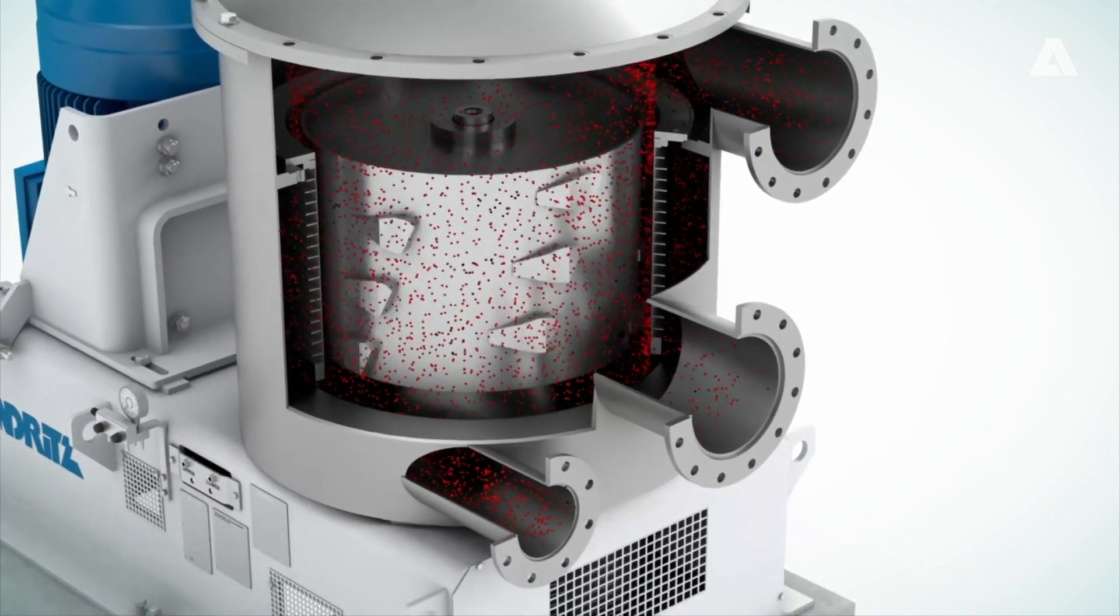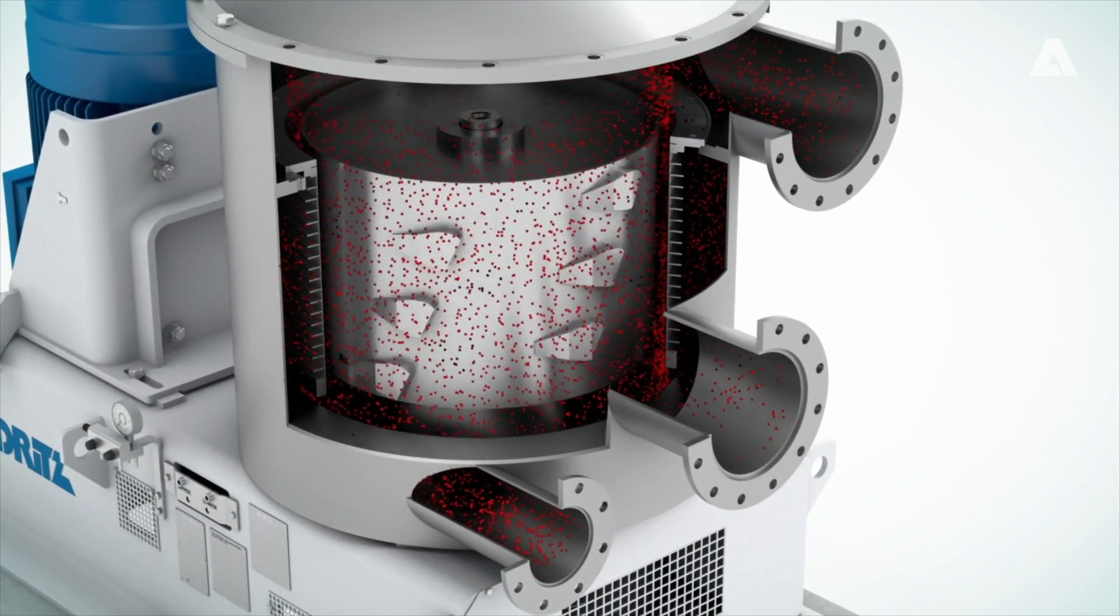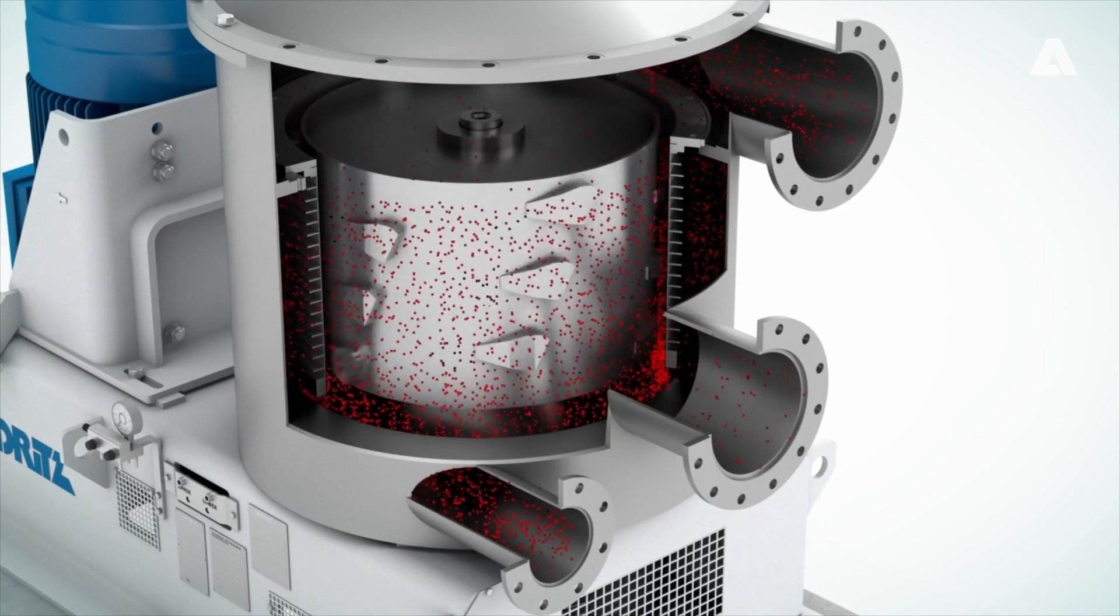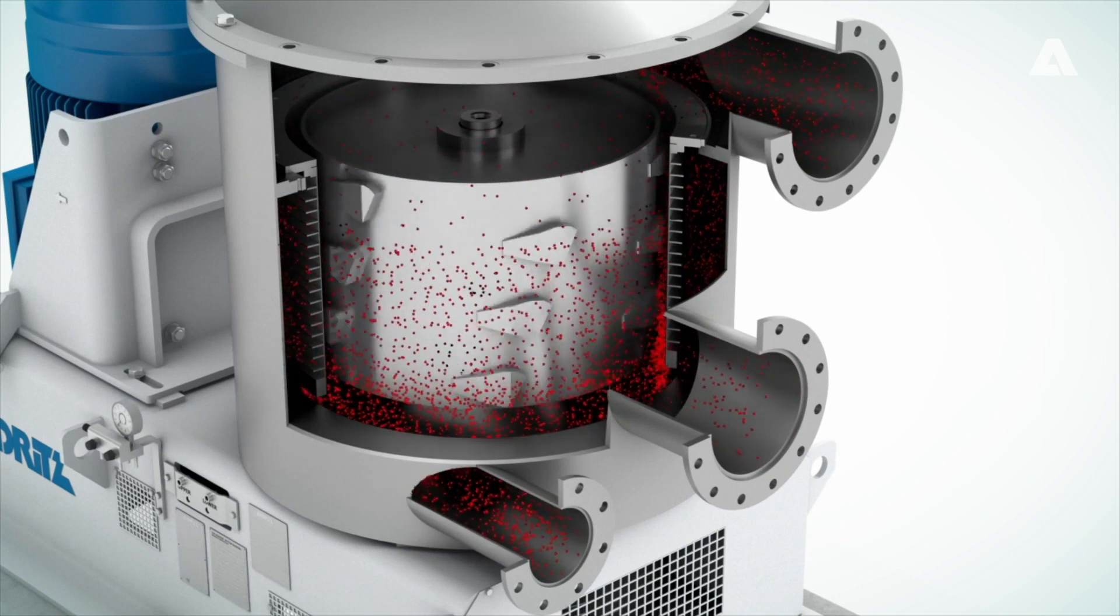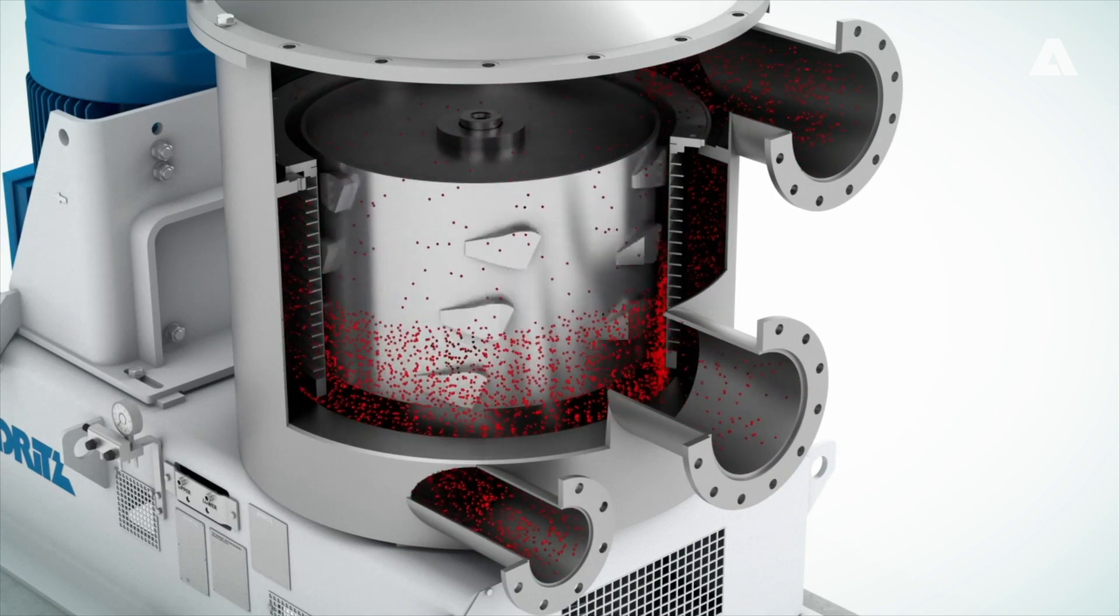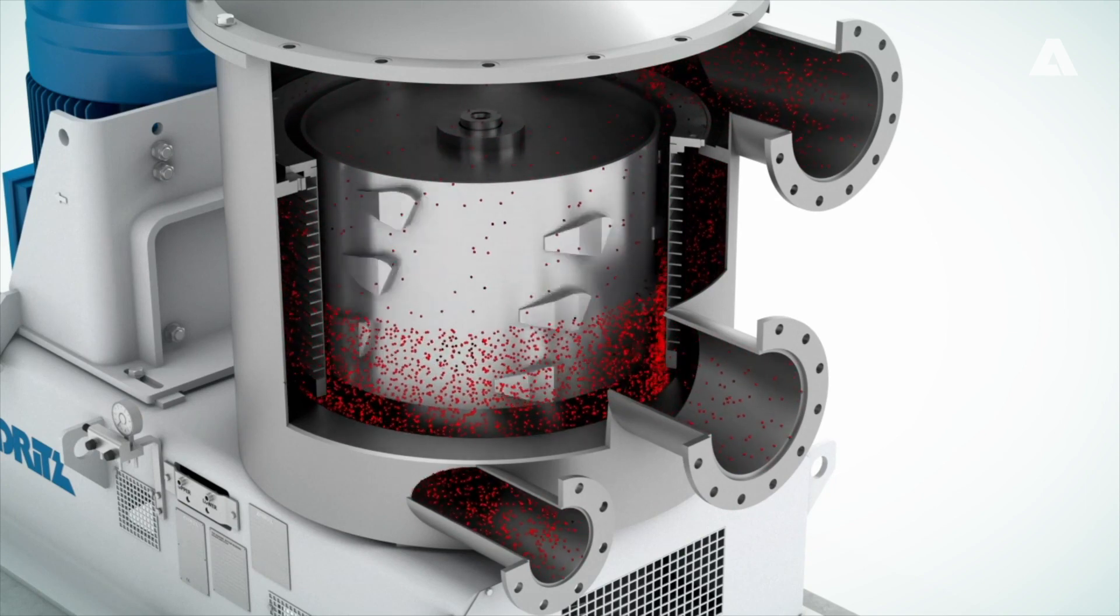During the screening process, the stock tends to thicken towards the reject end. This becomes more critical with narrow slots, which are often needed to meet the required screening efficiency. Thickening leads to higher fiber losses, lower yield, and can even cause plugging.